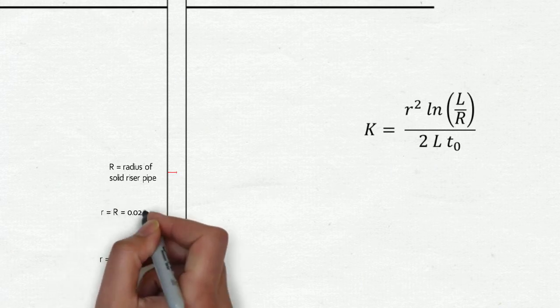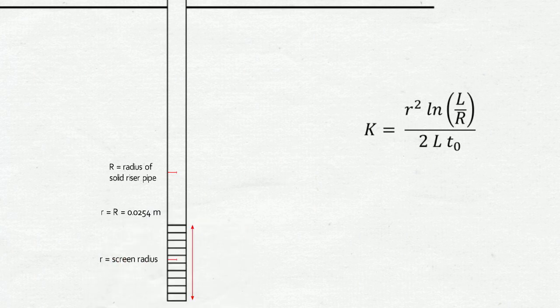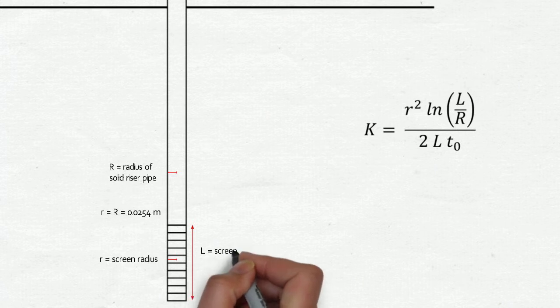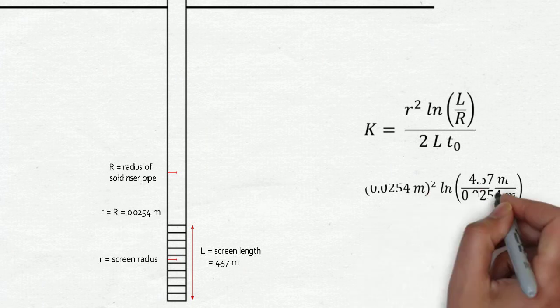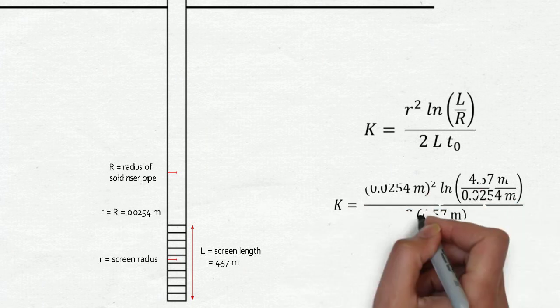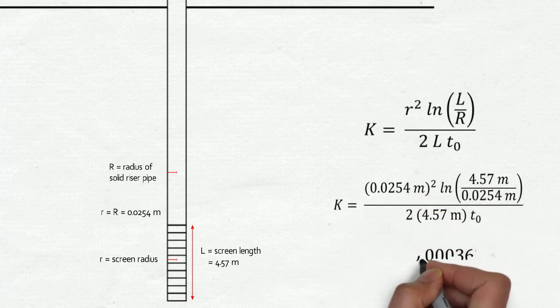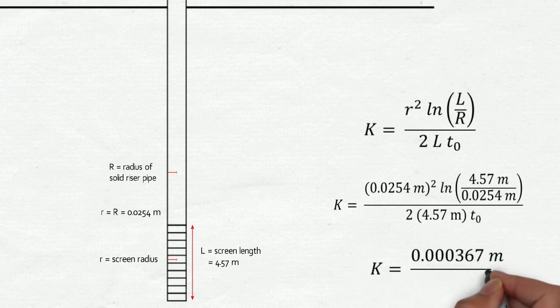Converting the units, a 2-inch diameter monitoring well has a radius of 0.0254 meters. A 15-foot long screen has a length of 4.57 meters. If we substitute these known quantities into the Vorcelev equation and multiply through, all that is needed to calculate k is a value for t0.